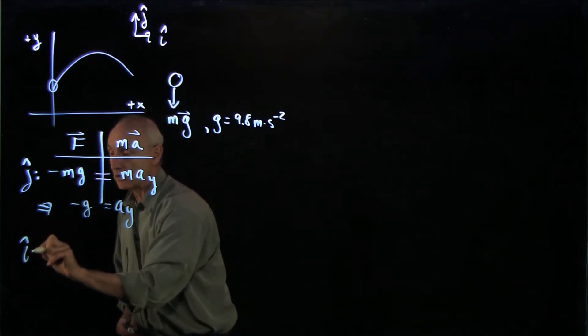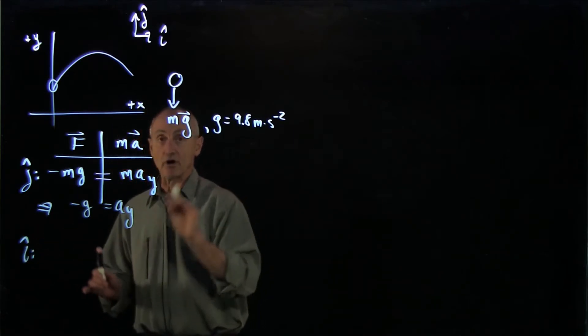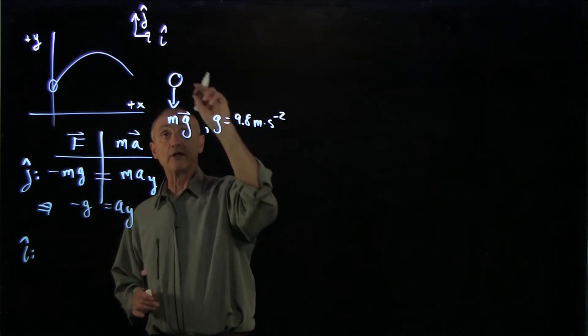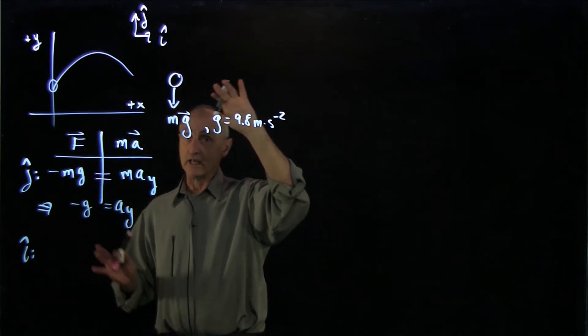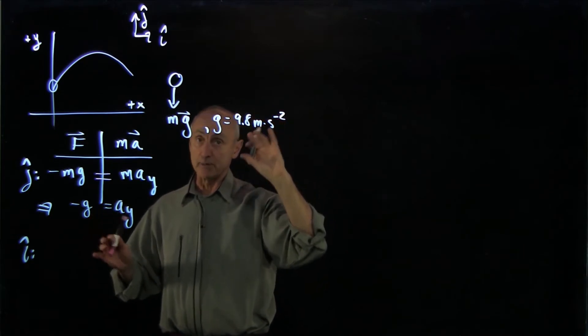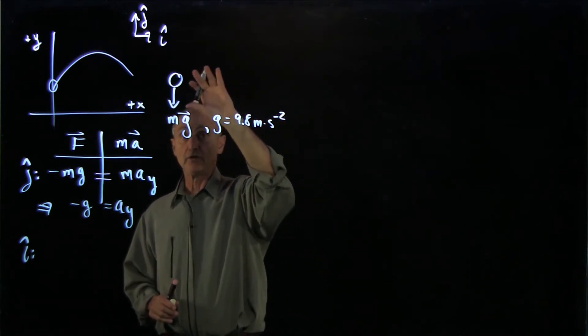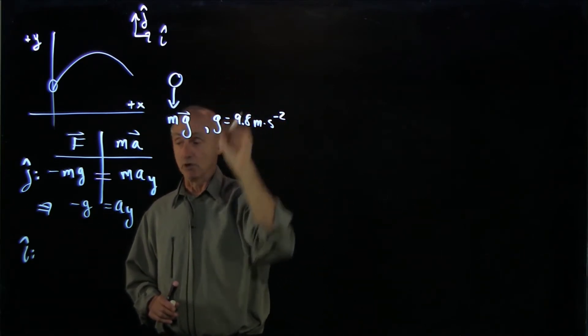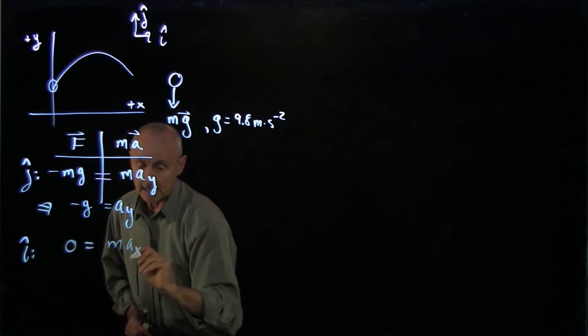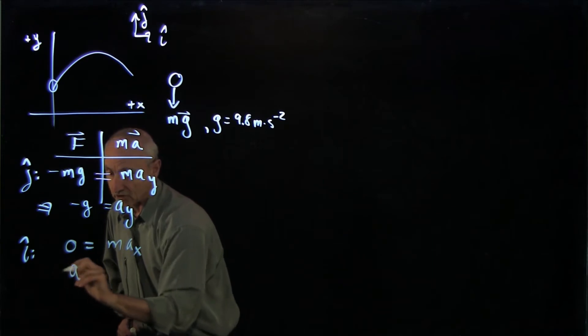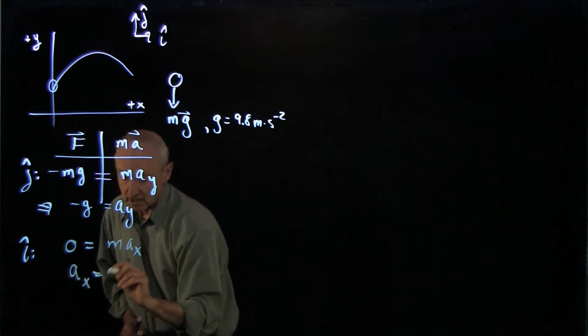Now likewise, keep in mind that we have our horizontal direction as well. Notice we're now assuming that there's no horizontal forces. In the real world, there can be all types of air resistance, but here, for the simplicity of this model, we have no horizontal forces. So we have 0 equals max, and so we have our separate equation, ax equals 0.